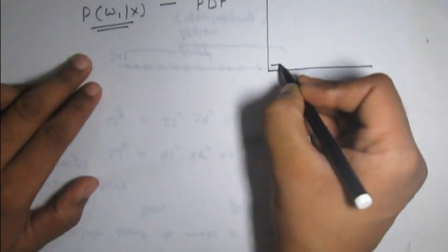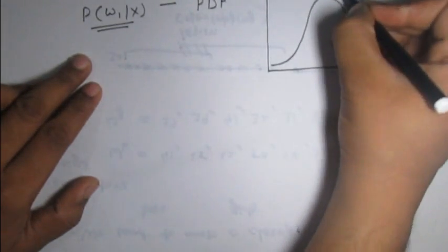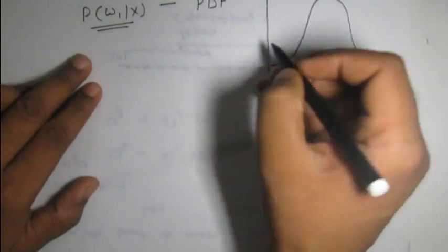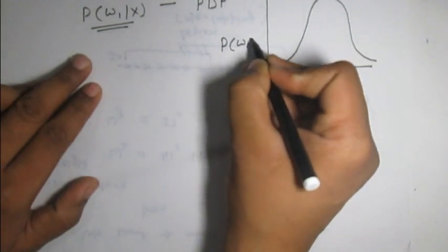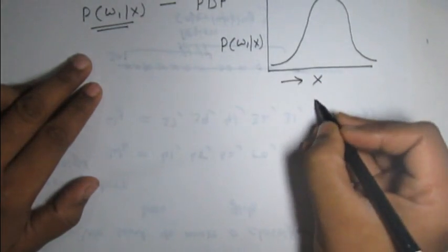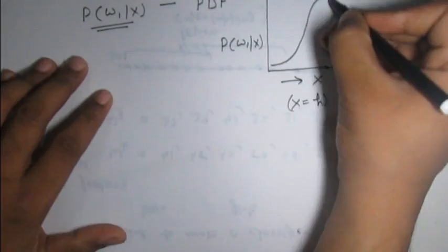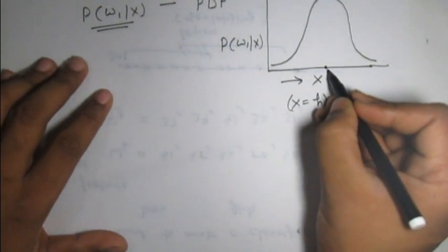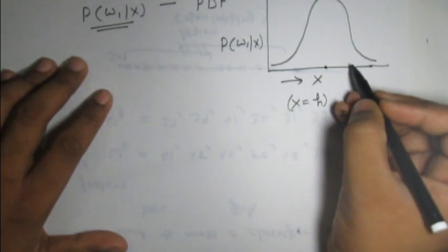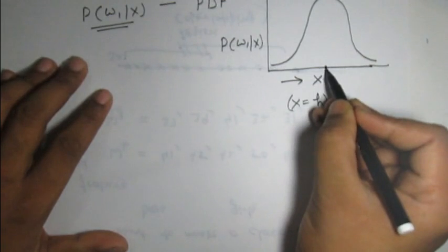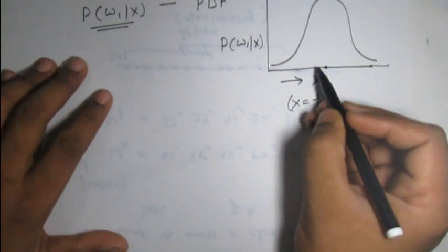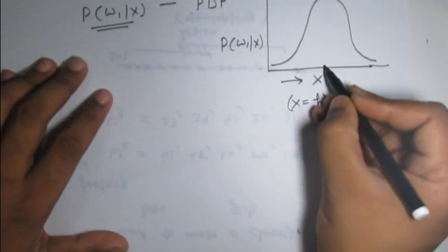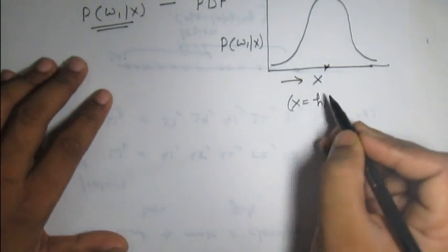The probability density function can be drawn for a particular class. Suppose this function is drawn for class omega 1, and for different values of x we get corresponding probabilities. Taking height as an example, for a particular value of x the probability that a student belongs to class omega 1 is maximum. As the value of x increases or decreases from that point, the probability of that student being in class omega 1 decreases.